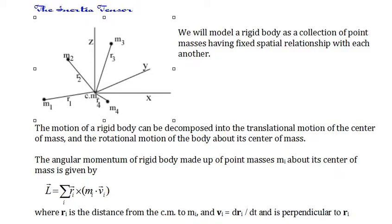Now we're considering the rotational motion of a rigid body about its center of mass. Newton's second law for rotational motion is that the applied torque equals the rate of change of angular momentum. So first we'll need an expression for the angular momentum of a rotating rigid object.